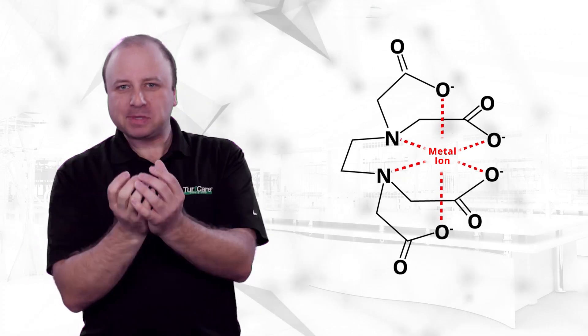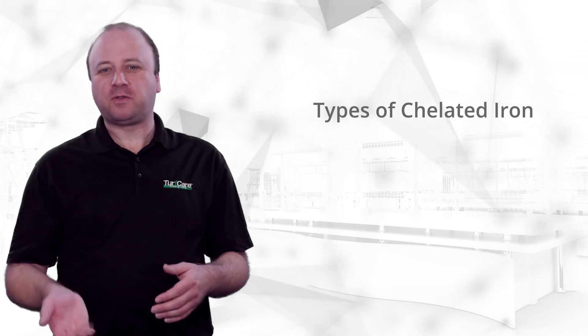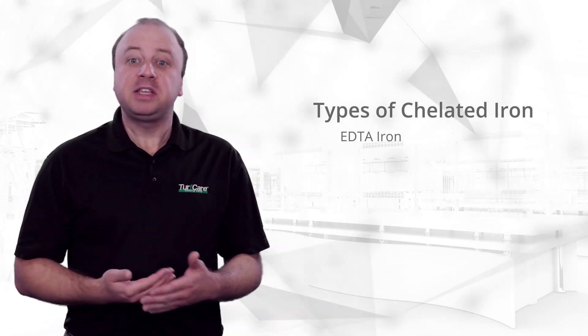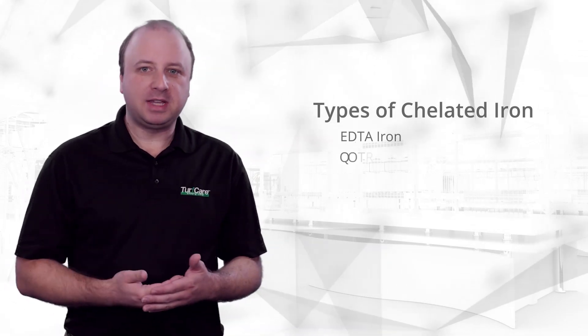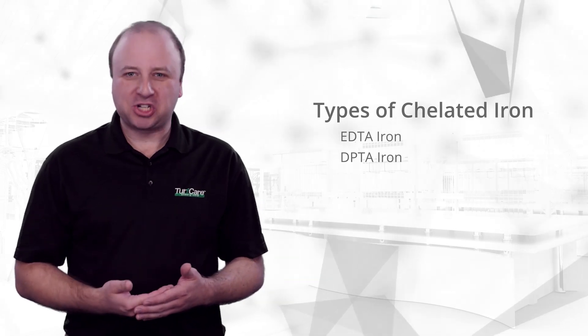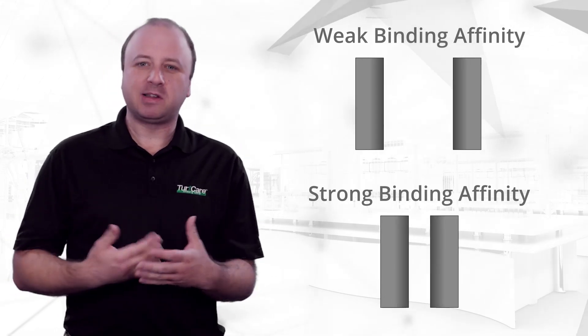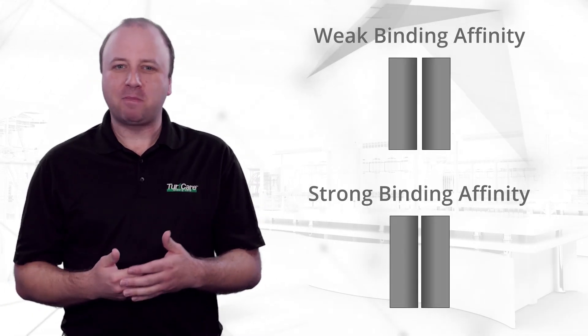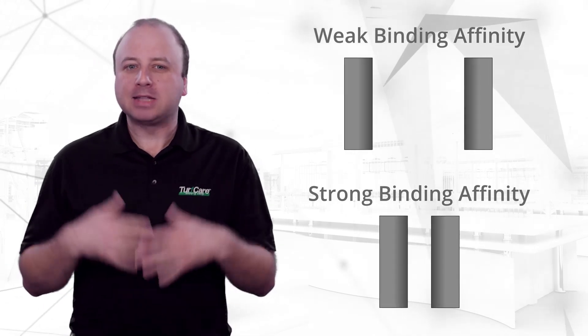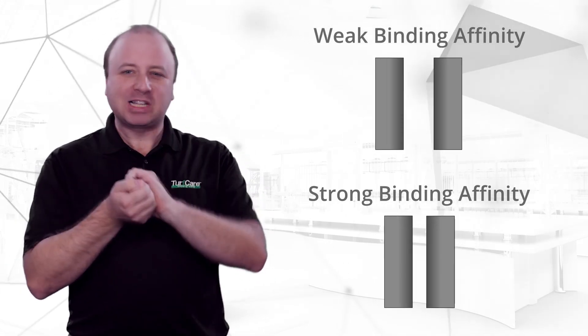In essence, chelated metals are protected or encapsulated by organic material. There are three major types of chelated iron used in the fertilizer industry: EDTA iron, DPTA iron, and EDDHA iron. Each of these chelated irons has a different binding affinity. The term binding affinity can best be explained by comparing different kinds of magnets — some magnets are easy to pull apart, like a refrigerator magnet, and some are almost impossible to pull apart, like two rare earth magnets.